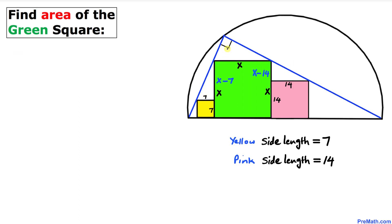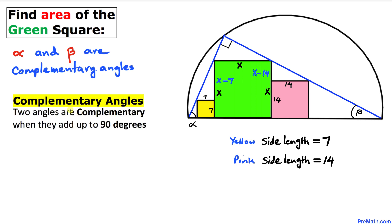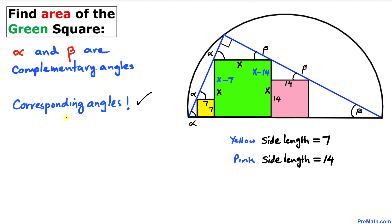Now let's focus on the big right triangle. Let's call one acute angle alpha and the other beta. Since the right angle is 90 degrees, alpha and beta are complementary angles — two angles are complementary if they add up to 90 degrees. By corresponding angles, alpha and beta each appear in the smaller triangles as well.